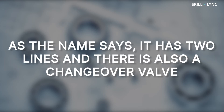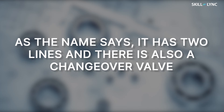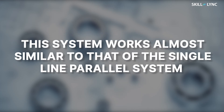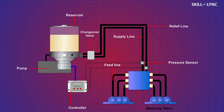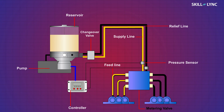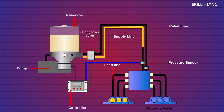As the name says, it has two lines, and there is also a changeover valve to switch connections between these lines. This system works almost similar to the single line parallel system. When the controller activates the pump, the lubricant gets pumped through the first line and the second line acts as a vent line. Once sufficient pressure is attained, the metering valve supplies lubricant to half of the total points.